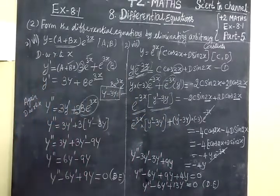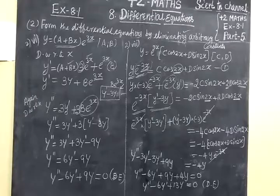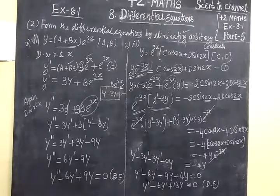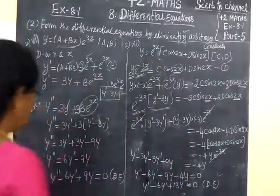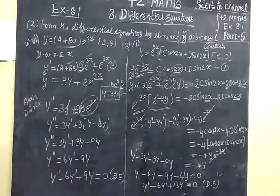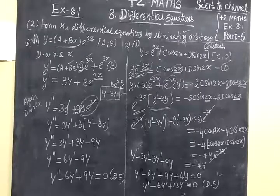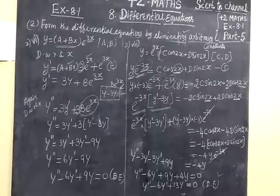We check the answer: y'' - 6y' + 13y = 0. This is correct. In the next class, Part 6, we will see the next two questions. Thank you.